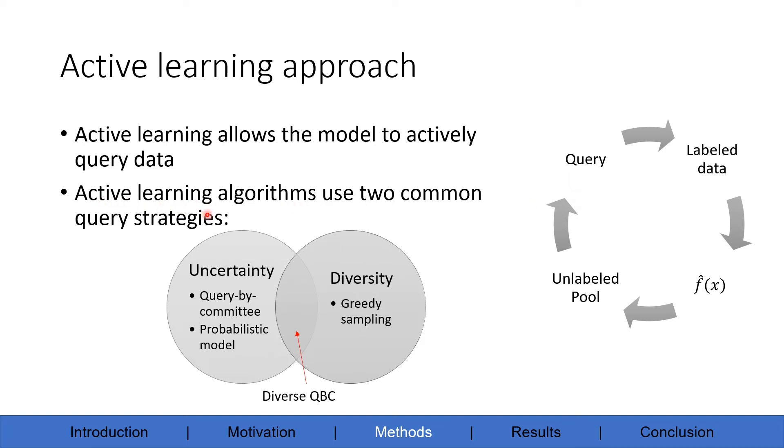Active learning algorithms typically use two common query strategies: one is uncertainty and the other is diversity. I've included query by committee, greedy sampling, and probabilistic model in my project due to their popularity in the active learning community. I'd also like to include a diverse QBC that incorporates both uncertainty and diversity.